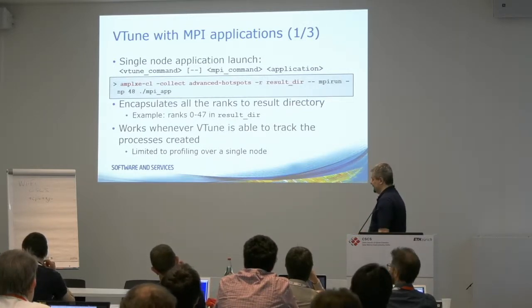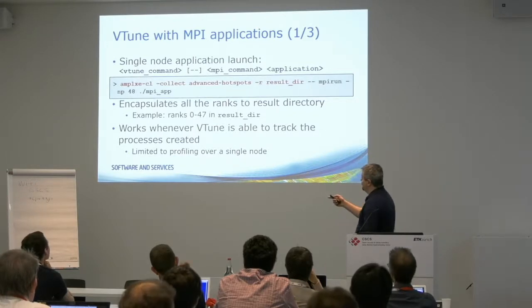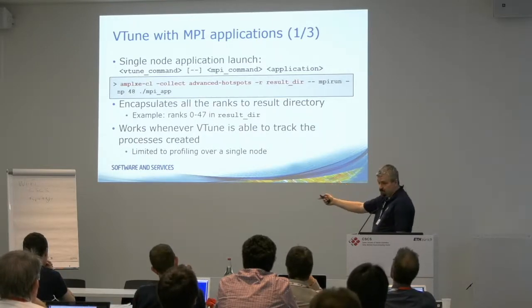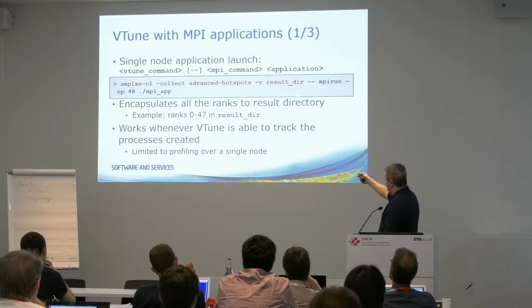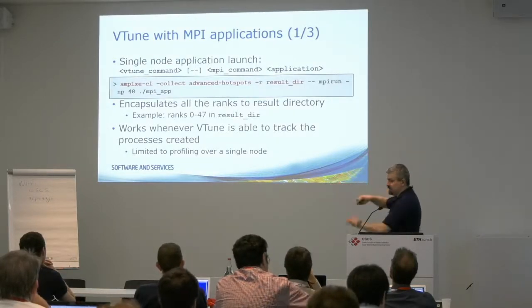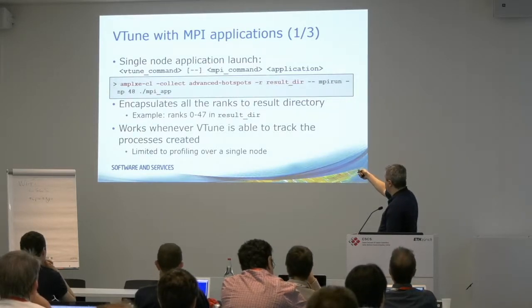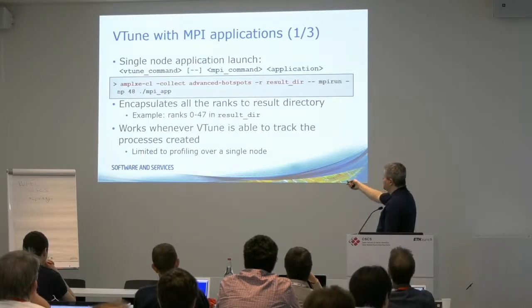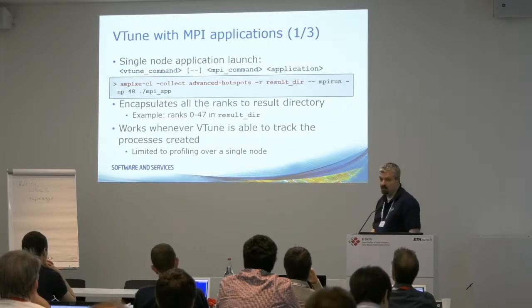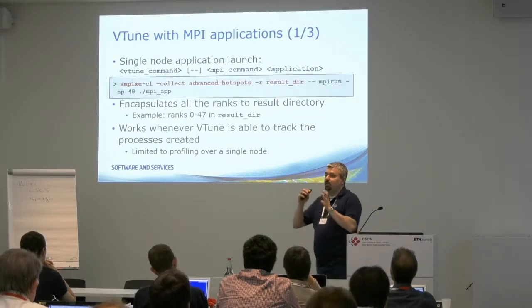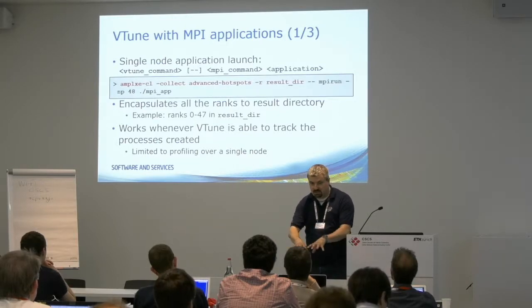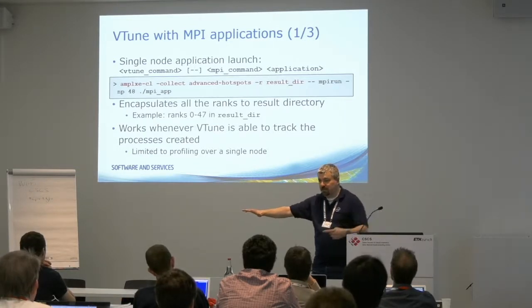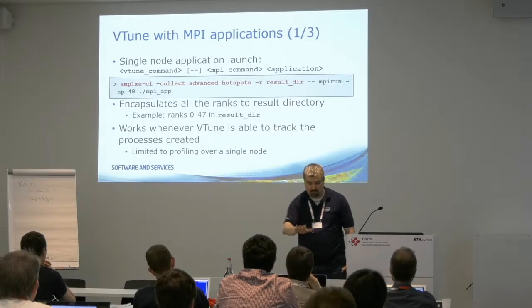When you do the following: you run amplxe-cl with all the command line arguments — collecting advanced hotspots into a result directory — and then your application is mpirun -np 48 and then your MPI command line. This means on the local node, start VTune, VTune starts the MPI run, MPI run starts your application, and VTune through MPI run attaches to your code on a single node only.